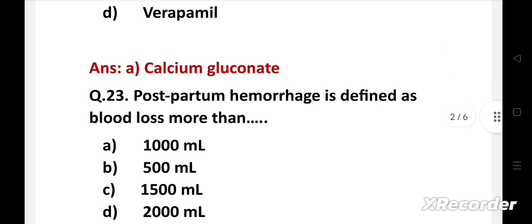Next question: Postpartum hemorrhage is defined as blood loss more than - Option A: 1000 ml, B: 500 ml, C: 1500 ml, D: 2000 ml.